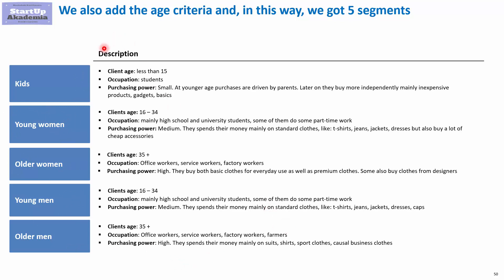Here you have a description of each and every segment. The difference between young women and older women starts from the age of 34 to 35. We have described the main things around purchasing power as well as how much they spend on what, and obviously the age of the customer.